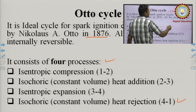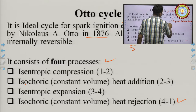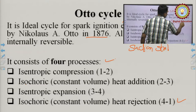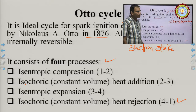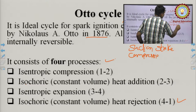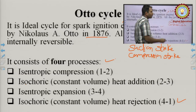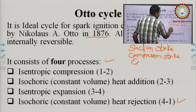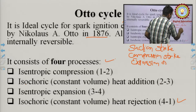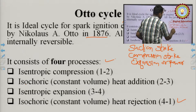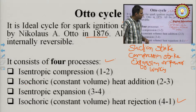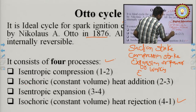The Otto cycle is used in petrol engines, which have four strokes: the suction stroke, in which a mixture of petrol and air enters the cylinder as the piston moves from TDC to BDC; the compression stroke, in which the fuel-air mixture is compressed as the piston moves from BDC to TDC; the expansion or power stroke; and the exhaust stroke.